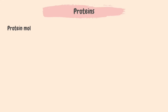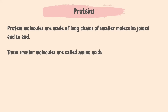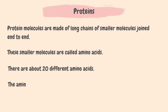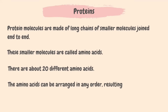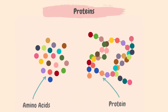Protein molecules are made of long chains of smaller molecules joined end to end — these smaller molecules are called amino acids. There are about 20 different amino acids. The amino acids can be arranged in any order, resulting in hundreds of thousands of different proteins. Even a small difference in the order of amino acids results in a different protein being formed.